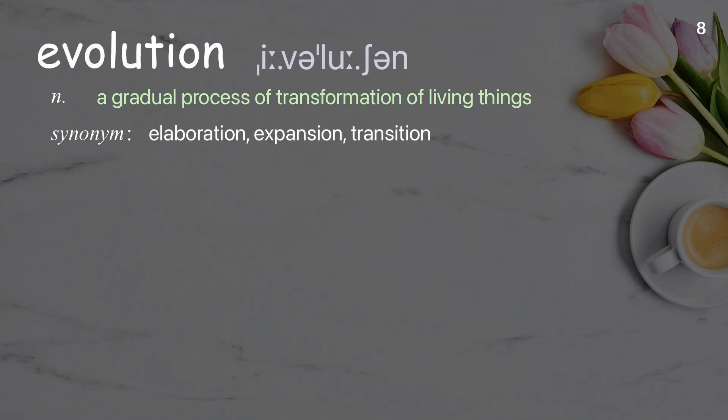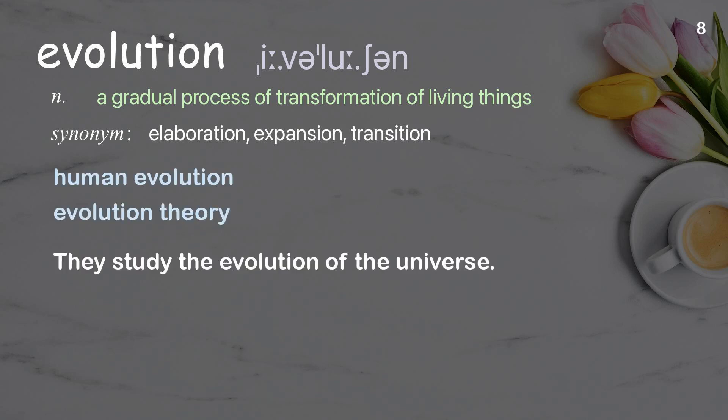Evolution: a gradual process of transformation of living things. Examples: human evolution; evolution theory. They study the evolution of the universe.